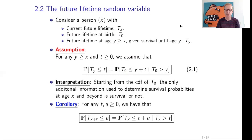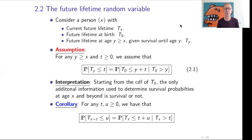The interpretation of this assumption is as follows. Starting from the cumulative distribution function of T0, the only additional information used to determine survival probabilities at age x and beyond is whether the person has survived or not. We do not take extra information about health condition. This may seem strange, but we are working in an insurance context — looking at survival probabilities used by an insurer to set premiums for life insurance contracts.